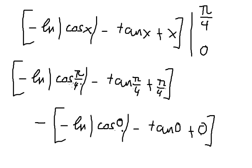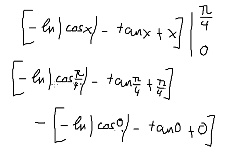At π/4, cosine π/4 is square root of 2 over 2. This gives negative 1. This gives π/4. At 0, ln of 1 equals 0, tan 0 is 0, and this is 0.